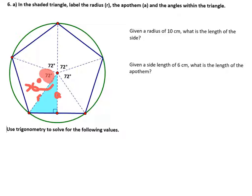Your radius here, your apothem, and then half of your side. So in this case, you're going to have a 36 degree angle. You'll have a right angle.